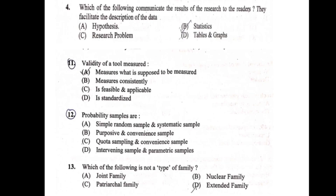The first question: what communicates the results of research to readers and facilitates the description of data? The options are: A) hypothesis, B) research problem, C) statistics, D) tabular graphs. Option D, tabular graphs, is correct. Tabular graphs include graphical presentation and linear presentation.